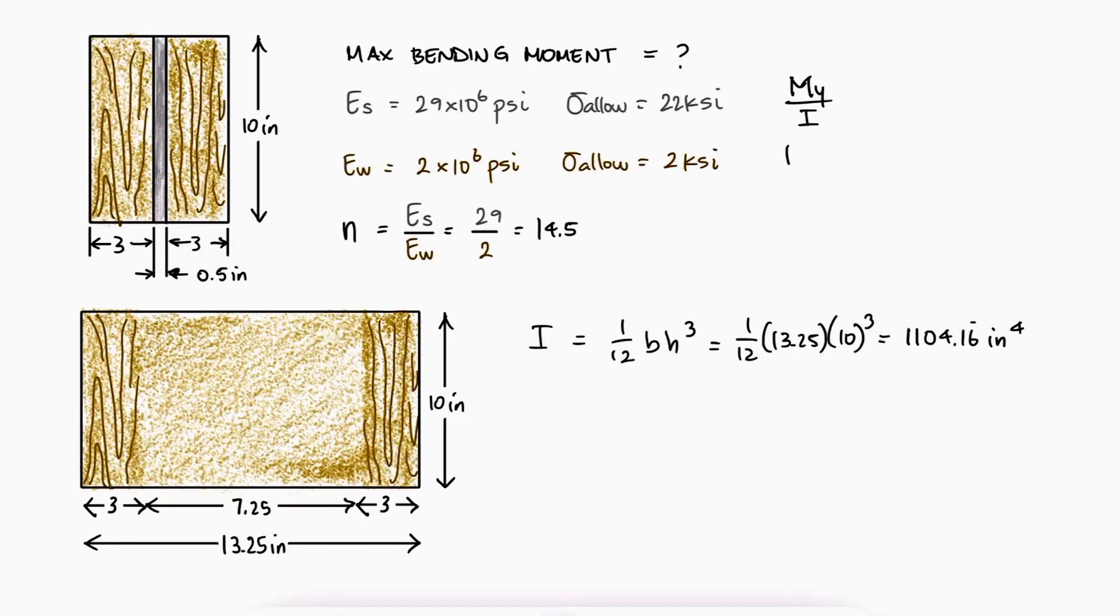Looking at the bending stress equation, which gives us the bending stress and should therefore not exceed the maximum allowable stress, we see that to find the stress in the steel, we would take the stress in the wood and multiply by the elastic moduli ratio.